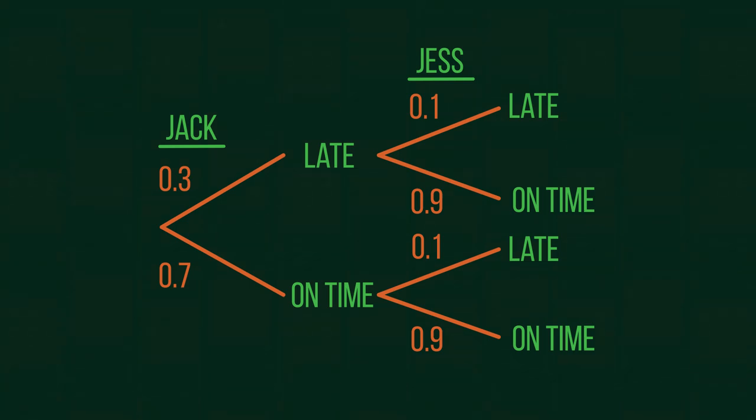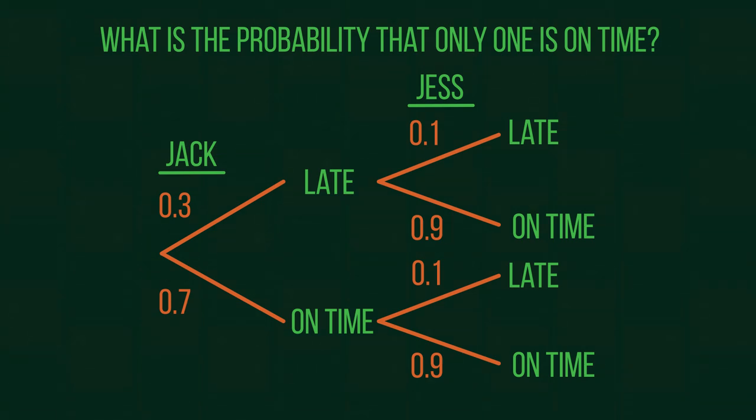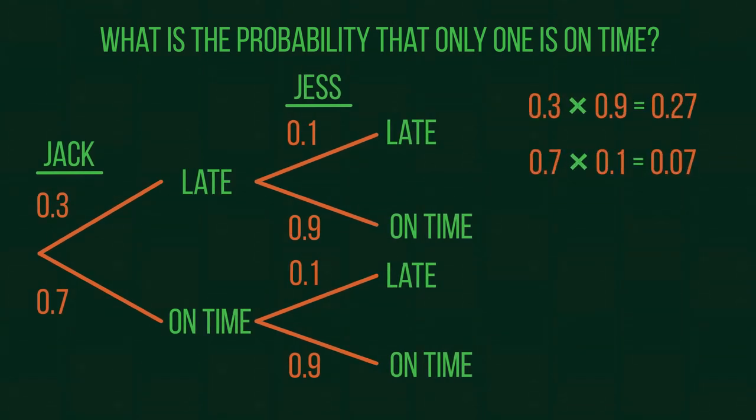Now we can look at solving the problem using our AND and OR rules. The question asks us for the probability that only one is on time. There are two branches which satisfy this requirement. To work out the probability of each of these situations occurring, we need to apply our AND rule and multiply them together. Because we have two eventualities that work for our question, we now apply the OR rule. So to find the probability of exactly one being on time, we add the two values together. Therefore, the probability of only one being late is 0.34.